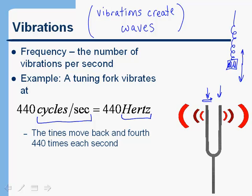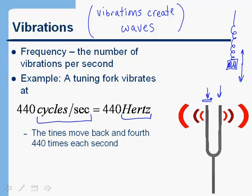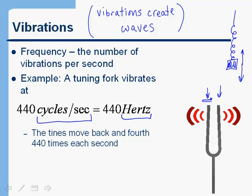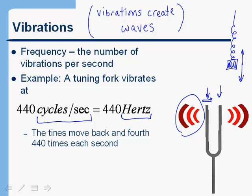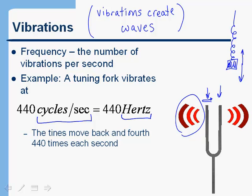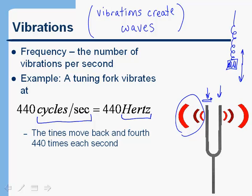If we have a tuning fork and we hit it, it oscillates at a certain number of cycles per second. Let's say it oscillates at 440 Hertz. That moves the air molecules around the tuning fork and produces a sound wave, which travels throughout the room, reaches your eardrum, and makes your eardrum vibrate at 440 Hertz. That's how your brain interprets it as a sound of a certain pitch. So something vibrating will create a sound wave.